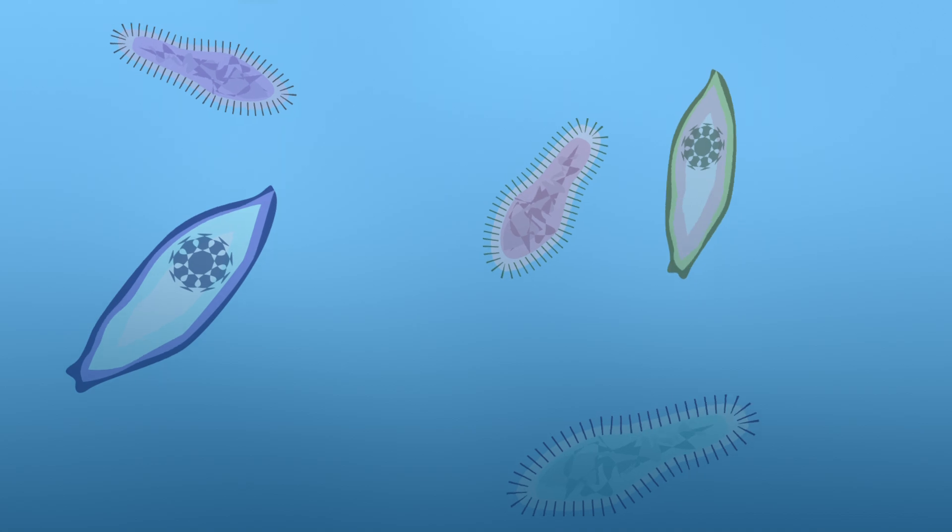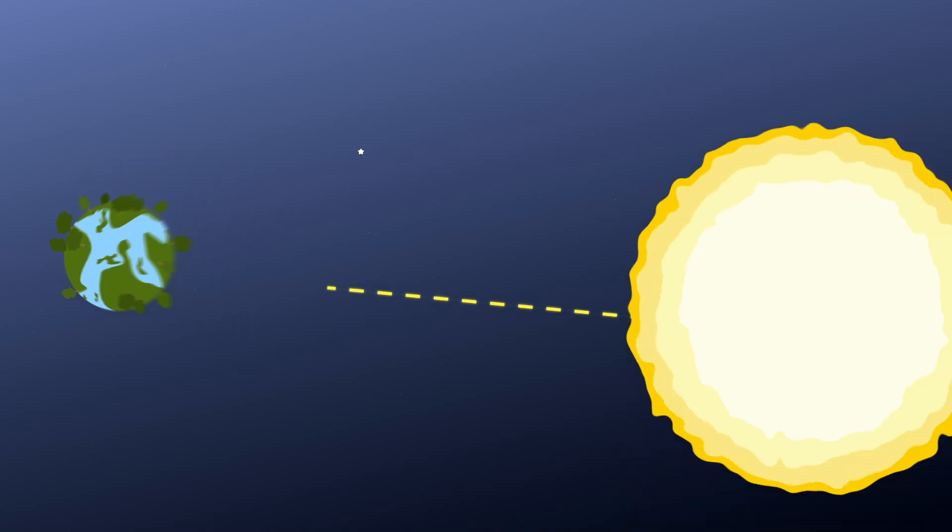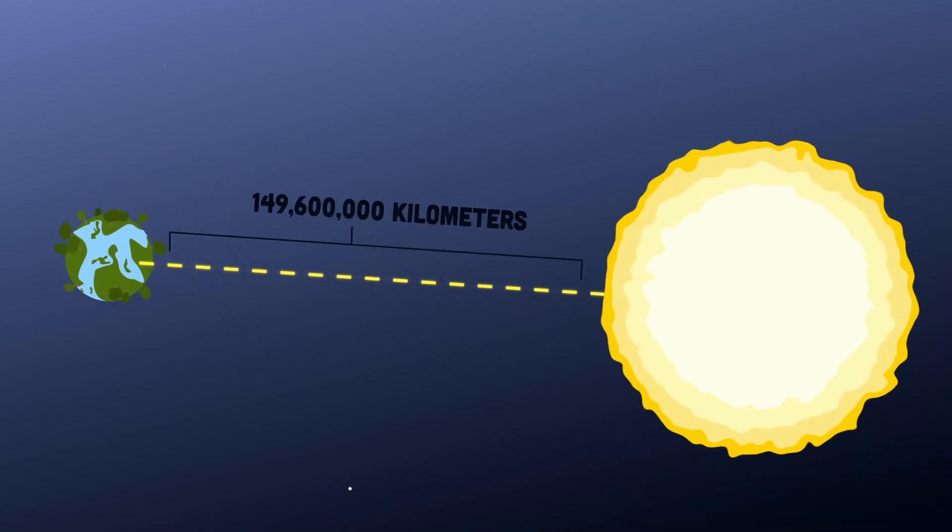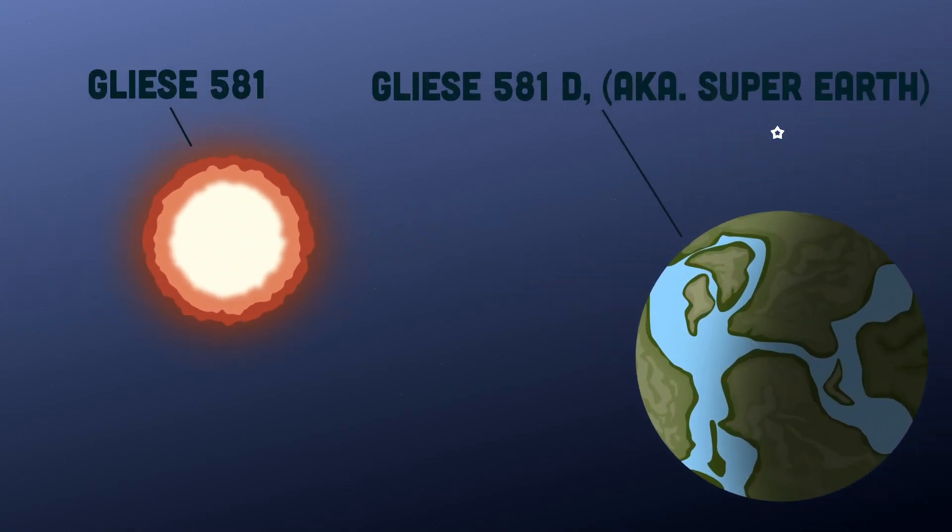We know that at the most basic level, organisms on Earth need three things – liquid water, a source of energy, and organic carbon-based material. We also know that the Earth is just the right distance from the Sun, so as not to be either frozen or molten. So planets within such a habitable range from their own stars may be able to support life.